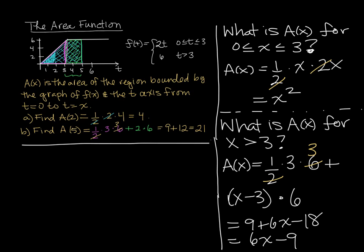So we can write that the area function as a function of x is also a piecewise function. That piecewise function is equal to x squared if 0 is less than or equal to x less than or equal to 3, and it is 6x minus 9 for x bigger than 3.